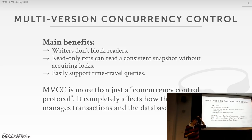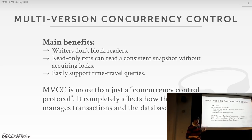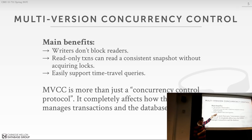Time travel queries are primarily used in the financial industry, where you care about having the last seven years of all bank transactions for regulatory reasons. Most applications don't actually need this — it's done at the application level. It's only really in banks that I see people using the explicit MVCC feature for time travel queries. This is not a new idea — some systems claim it as novel, but Postgres did this in the 1980s. The first version of Postgres had time travel queries because all you do is not implement garbage collection and you get it for free.